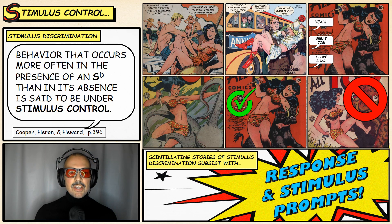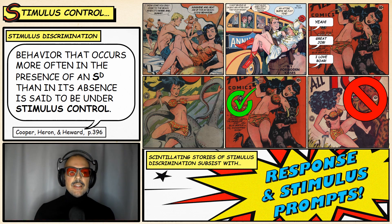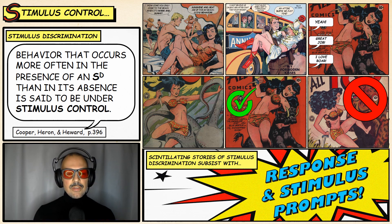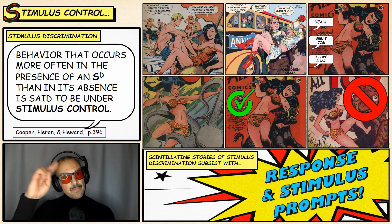That is the end of this video. Today we introduced stimulus control, looked at stimulus discrimination — when a behavior occurs more often in the presence of the discriminative stimulus — stimulus generalization — when behavior occurs in the presence of stimuli other than the discriminative stimulus — and stimulus discrimination training — how you attain stimulus control by reinforcing a behavior in the presence of a discriminative stimulus but not in its absence. Join us next time when we look further at stimulus control and examine response and stimulus prompts. Thank you for joining me — stay frosty, stay functional!